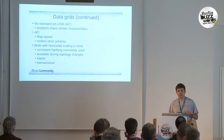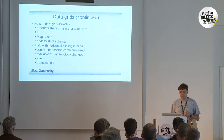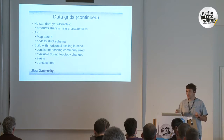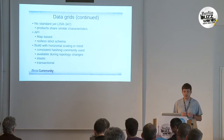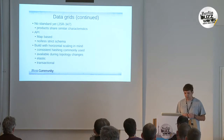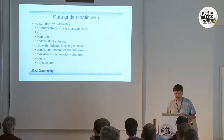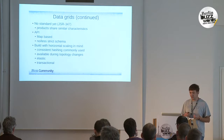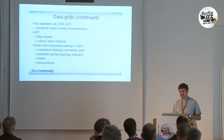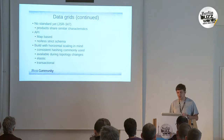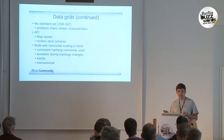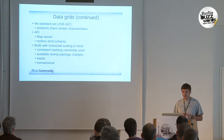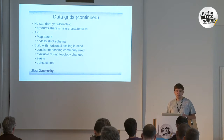To achieve horizontal scale, most data grids make use of consistent hashing — a technique that has been around for a while and is described at length in Amazon's Dynamo paper. Data grids also keep serving clients when nodes are added or removed from the cluster; in data grid terminology, that is called a topology change. They are built from the ground up with the idea that nodes might be added and removed at runtime, and they generally offer good transactional support. That's what elasticity is about — they expect nodes to crash.